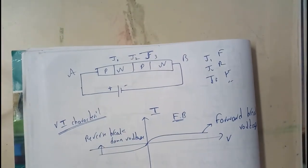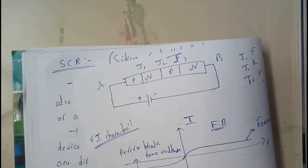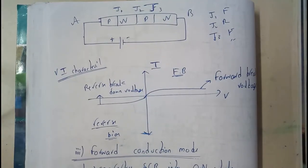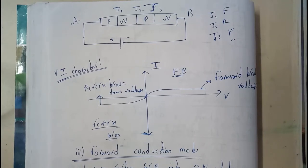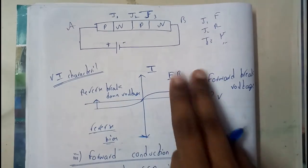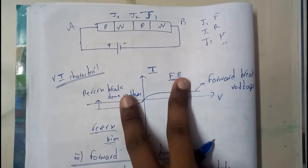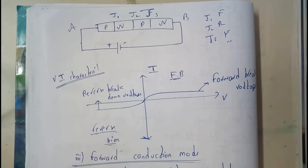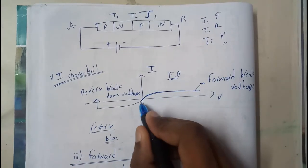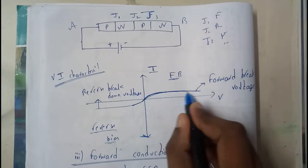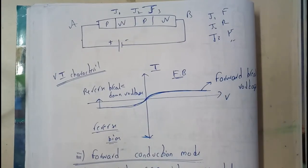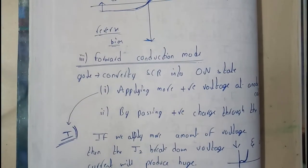Now let's go through the VI characteristics graph. It is 100% similar for both reverse bias and forward bias. In forward bias we have two junctions forward and one reverse; in reverse bias we have two junctions reverse and one forward. So there is no much change — in both directions we get only a slight amount of current, and for increasing voltage we get very very low current.